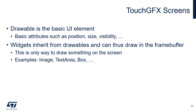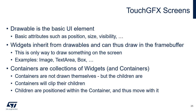An image has more attributes than a simple drawable — it has a link to a table containing the pixels of the image to be refreshed, so when drawing an image we use its position and size but also retrieve all the pixels to be redrawn. Containers are not drawables themselves — they are a collection of widgets and other containers, but the children are drawn. When you draw a container, you in fact ask all the widgets it contains to draw themselves, and the children are positioned within the container.